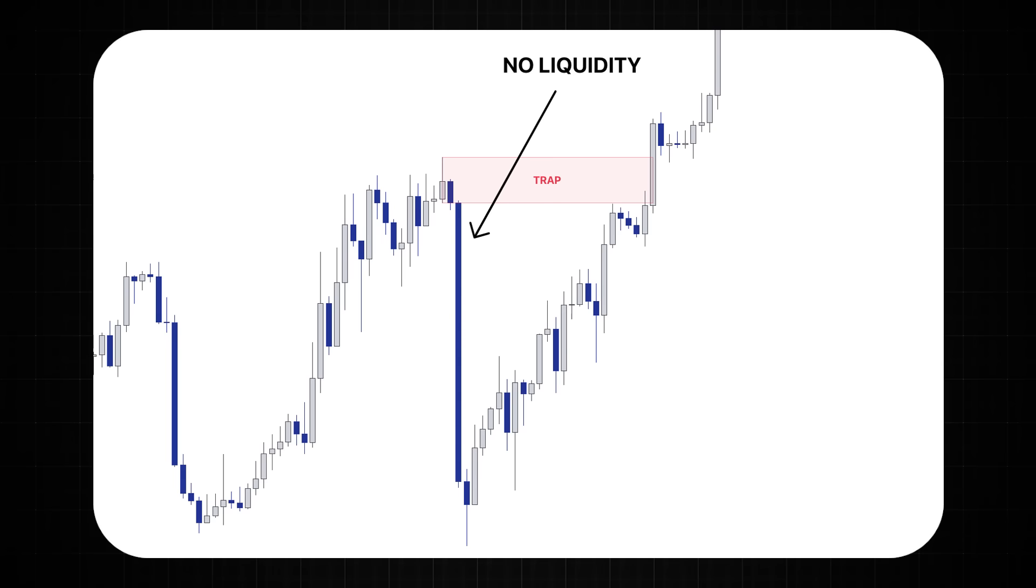But if there isn't any available liquidity then very often these zones are traps and they will usually fail. Here you can see that there is absolutely no available liquidity in the leg so this is a very obvious trap as institutions will not be selling here.